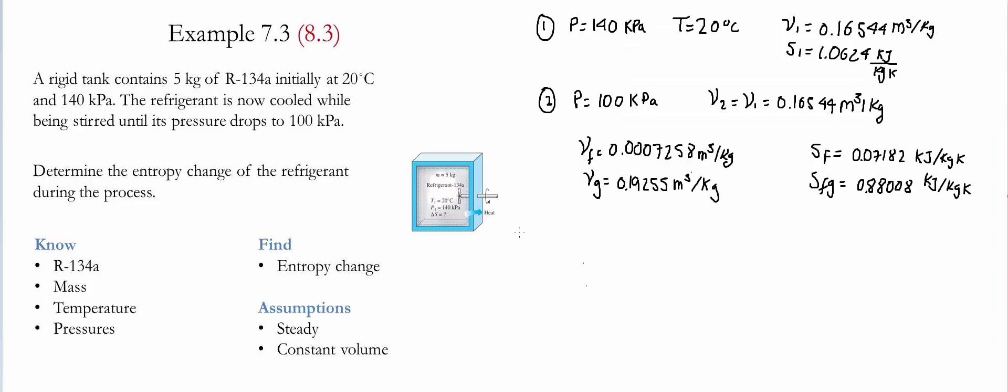Now that we determine state 2 is a saturated mixture we need to find the value of the quality. Quality is defined as the specific volume at state 2 minus the specific volume of saturated liquid, divided by the difference. Using the values provided we find that the quality is 0.859.